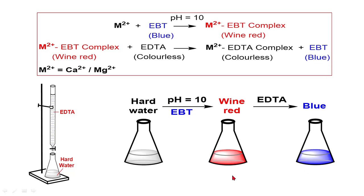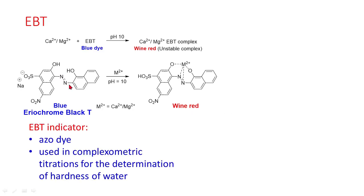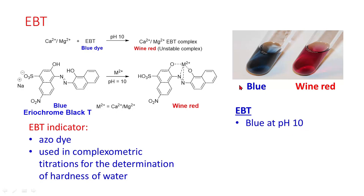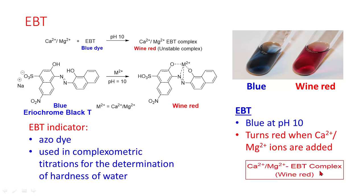The end point is wine red to blue color. This is the structure of Eriochrome Black T. It is an azo-dye used in complexometric titrations for the determination of hardness of water. The wine red color arises when calcium and magnesium ions form a complex with EBT. EBT is blue at pH 10, and it turns red when calcium and magnesium ions are added, forming the wine red calcium-magnesium EBT complex.